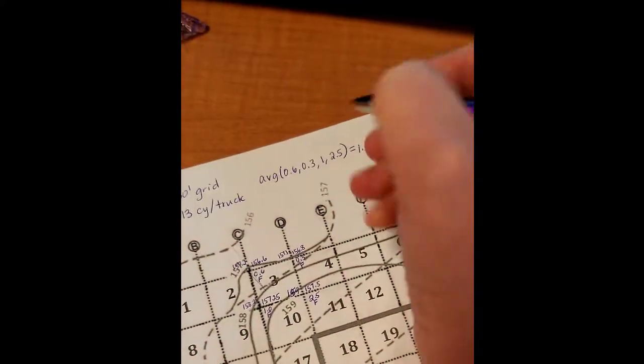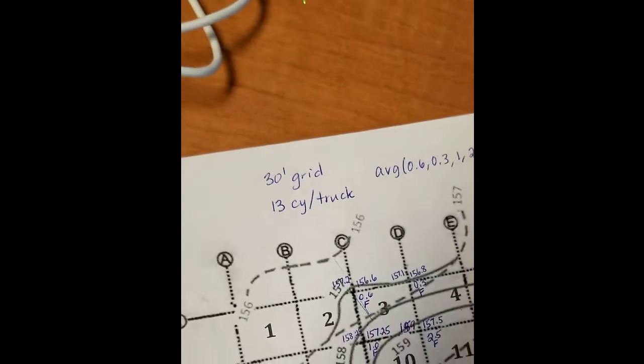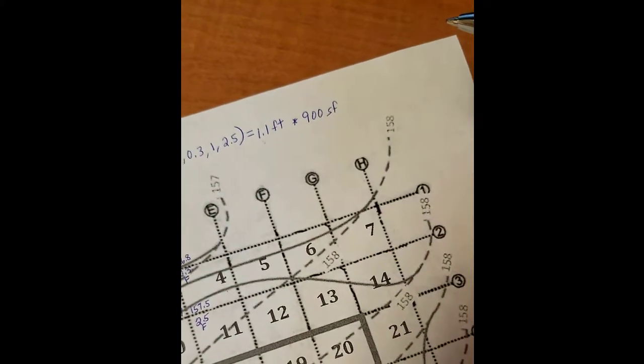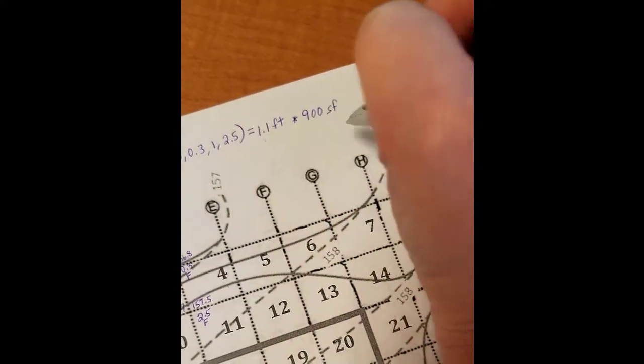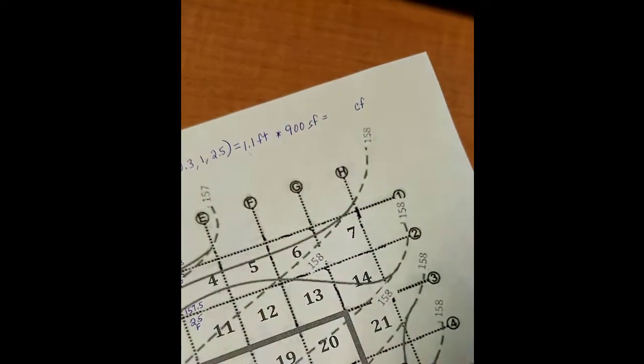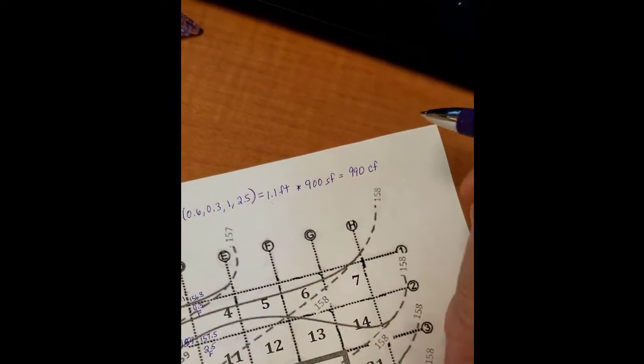So now we're going to take this and multiply it by what's the area of the grid. Well, 30 times 30 is 900 square feet times the 1.1 feet will give us cubic feet. So 900 times 1.1 equals 990.